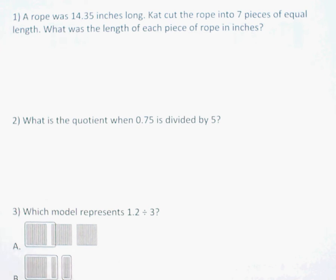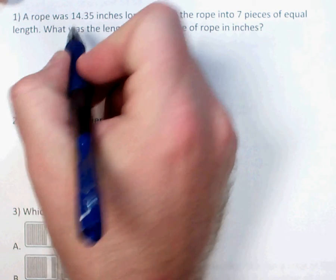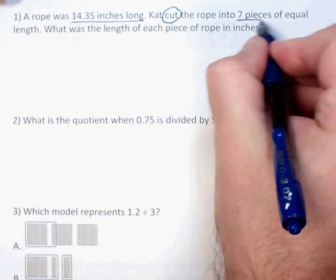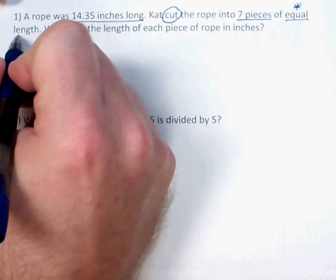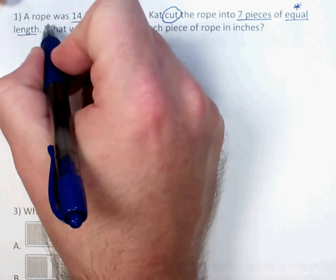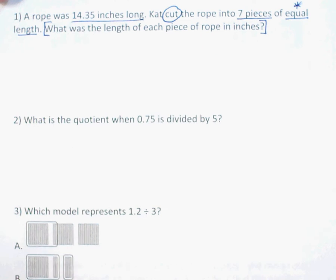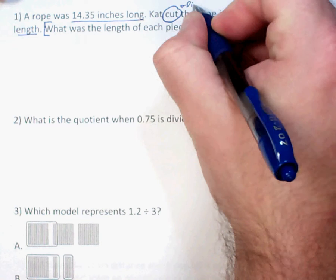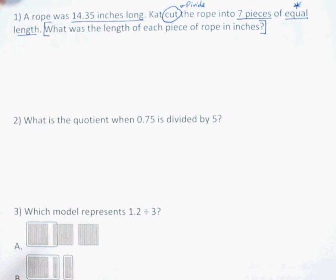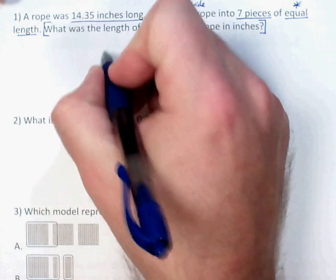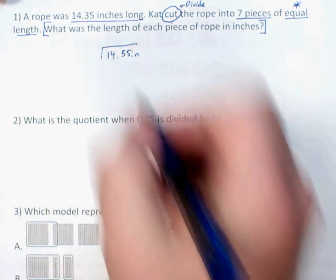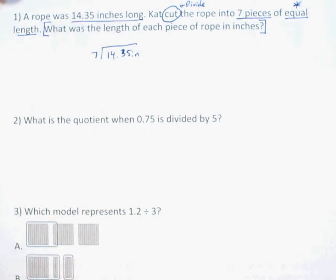On number one: a rope was 14.35 inches long. Cat cut the rope into seven pieces of equal length. What is the length of each piece of rope in inches? We're looking for the length of the individual pieces. If we see the word 'cut,' we need to be thinking dividing, because cutting something into equal pieces is basically dividing it up. Our original rope was 14.35 inches long and we're dividing it into seven equal pieces.